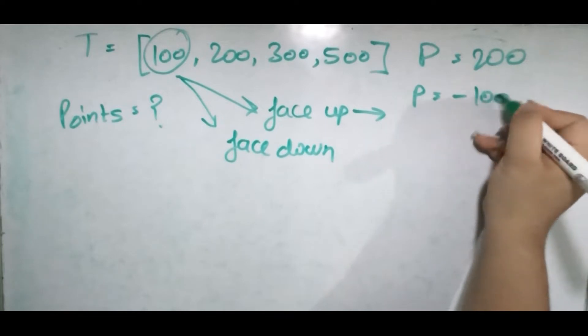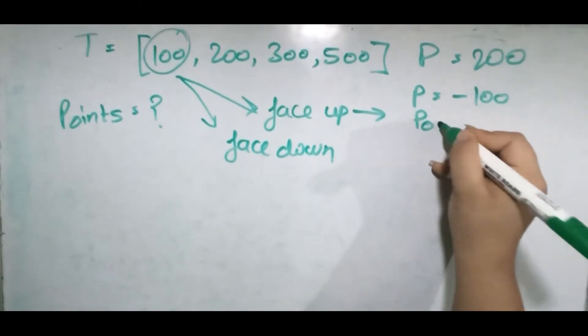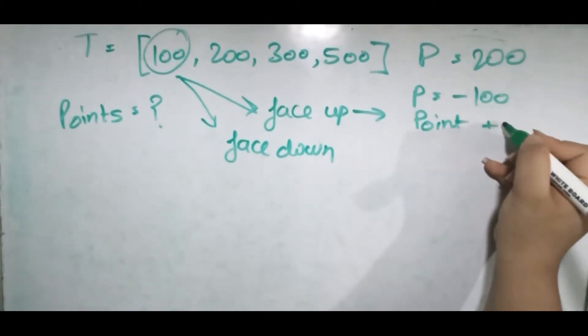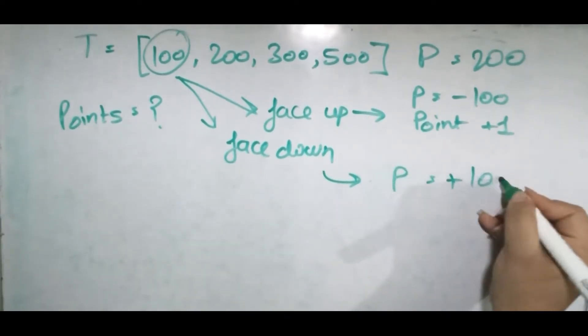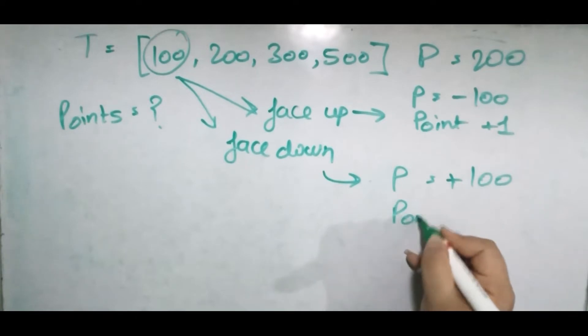Or if we choose face down, our power will increase by 100 and our points will decrease by one. So we have to tell at any point in time what is the maximum number of points one can have.